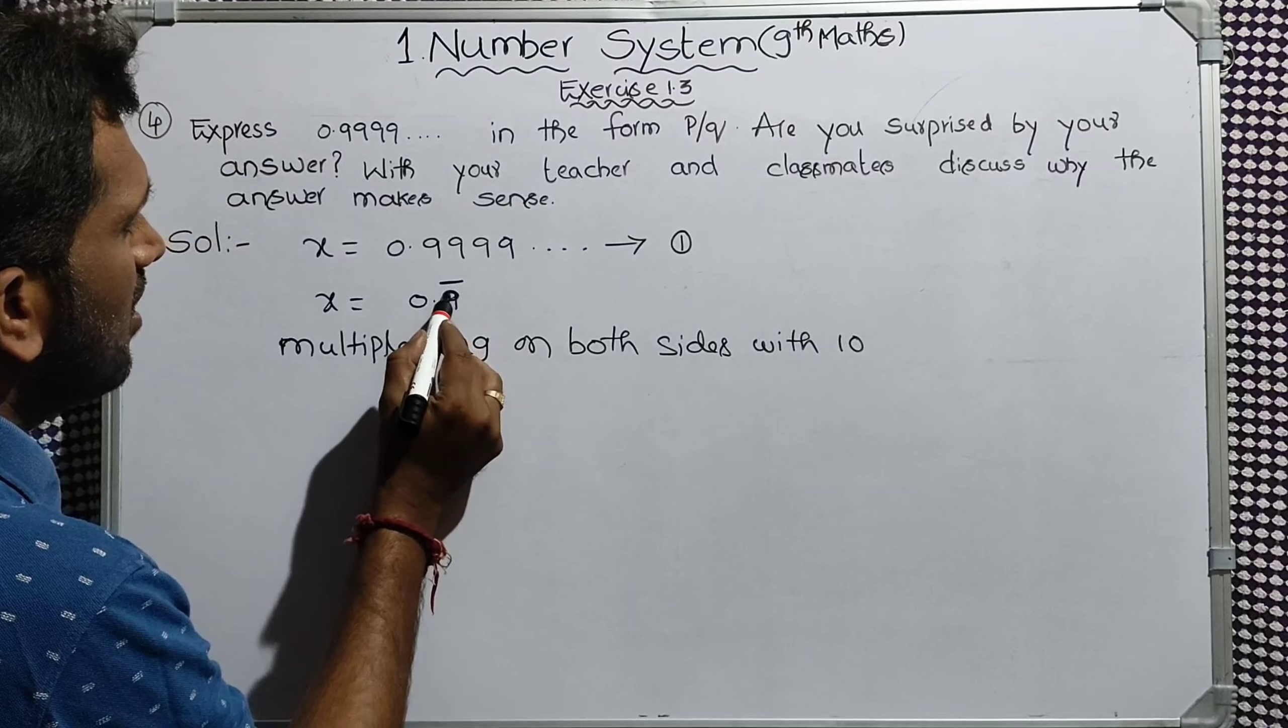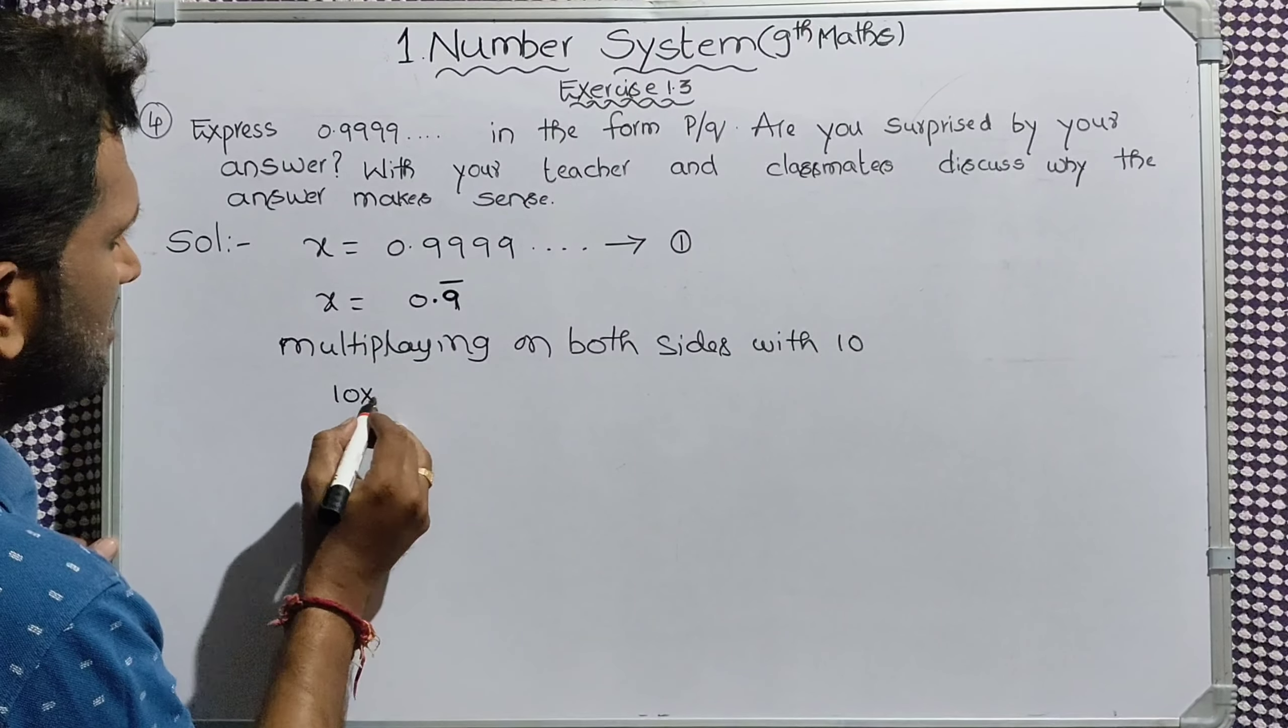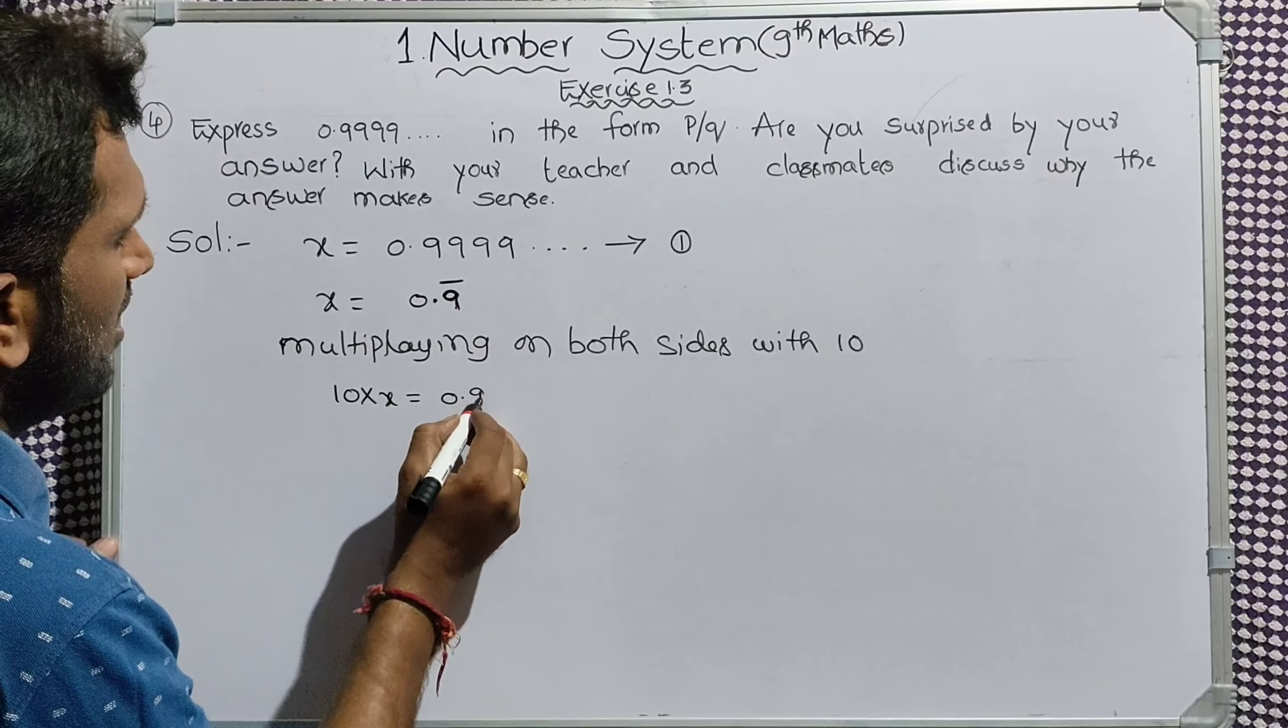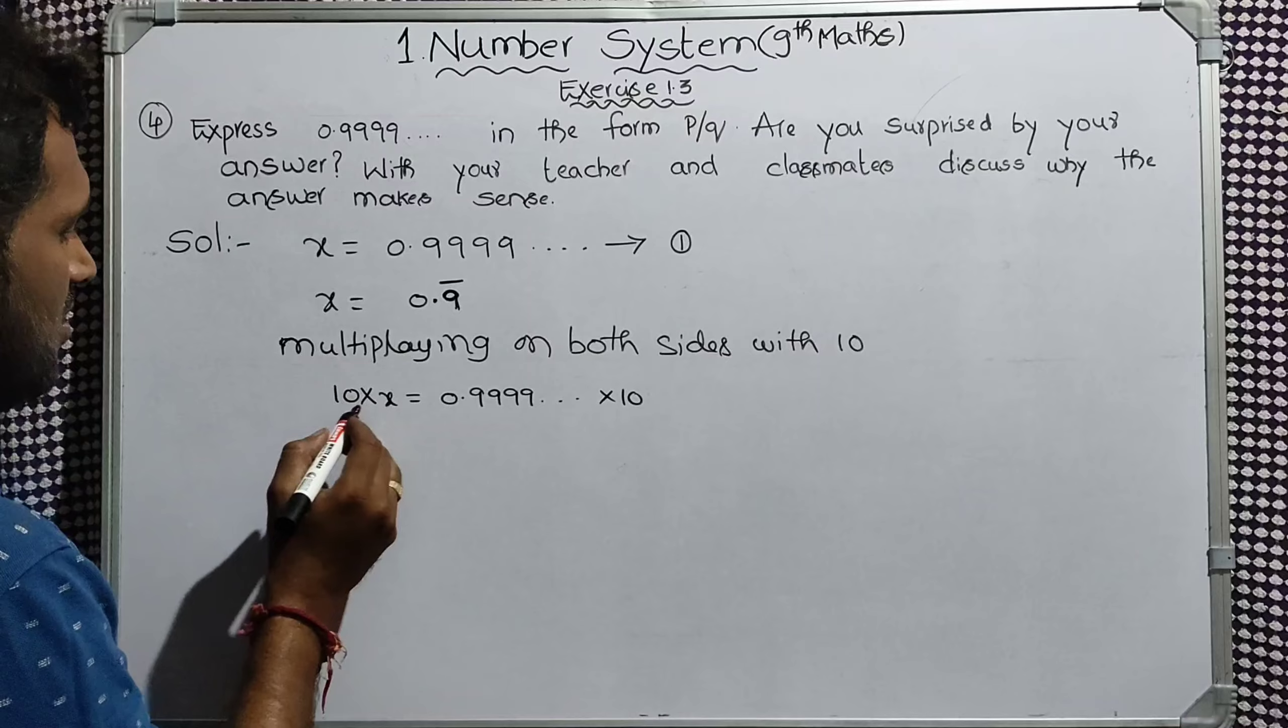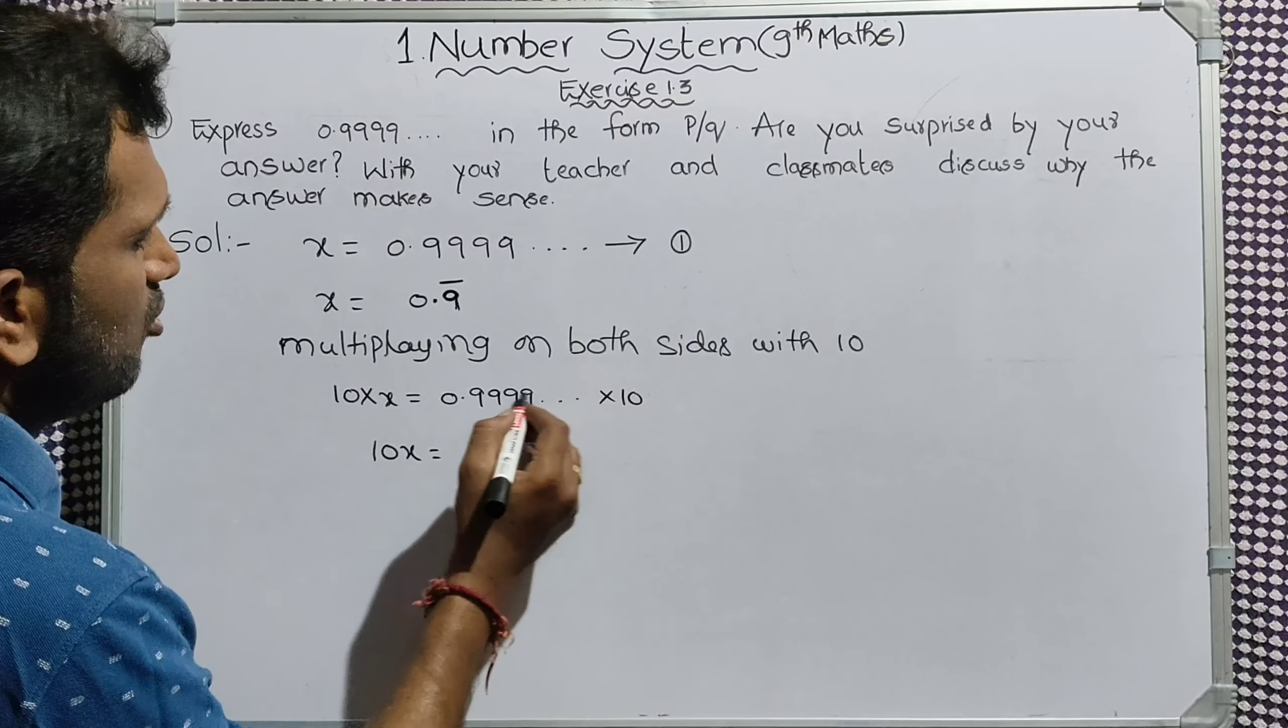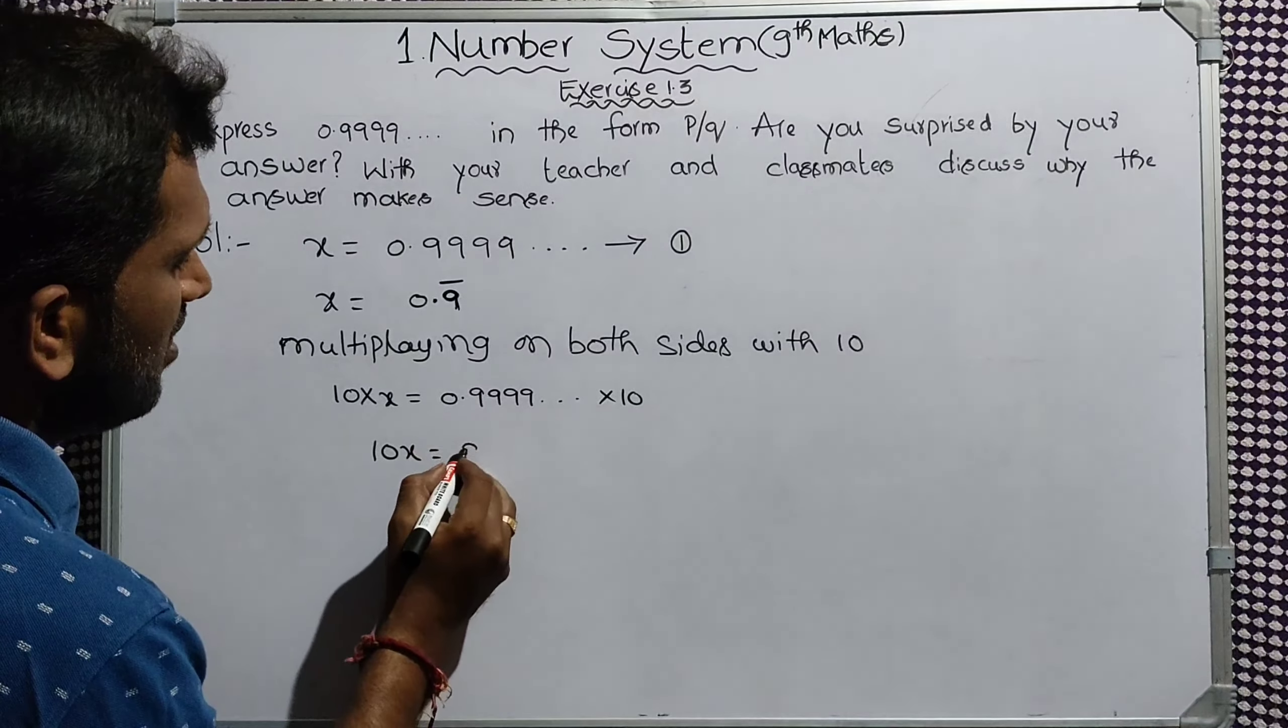10 into x equal to 0.9999 and so on into 10. 10 into x. 10 into x equal to we have 10 multiplied by 9.999. This is equation 2.